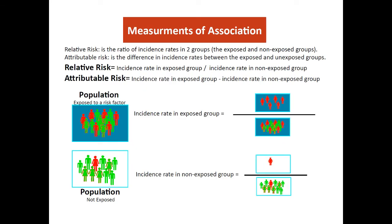We use two different scales to measure the strength of association. One is a ratio scale, based on the rate between the incidence rate in exposed and non-exposed groups. The other is a difference scale, based on the absolute difference between the incidence rate in exposed and non-exposed groups.